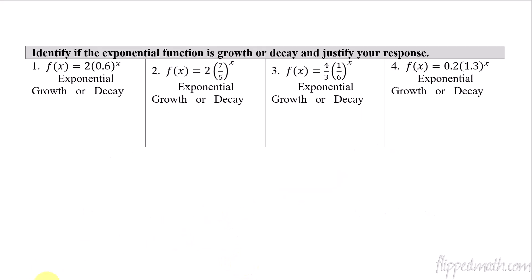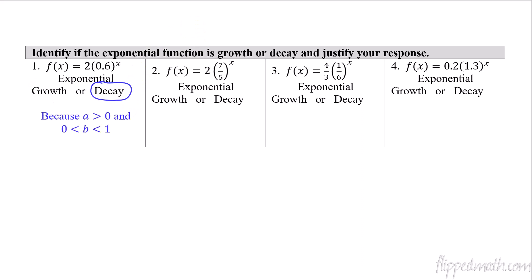Let's do some easy problems — just determine growth or decay. For the first one, we recognize that a is positive and b is between zero and one but larger than zero, so this represents decay. We justify it by saying: a is greater than zero and b is between zero and one. That's how we justify exponential decay.